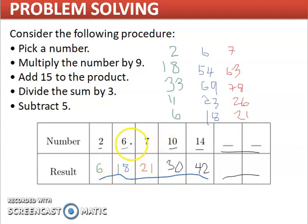We get 30. On the number 14, we get 42. And so it seems that these numbers here are 3 times the number that we pick.